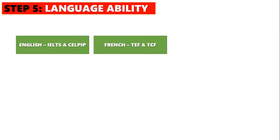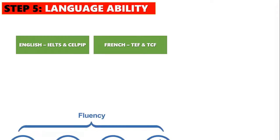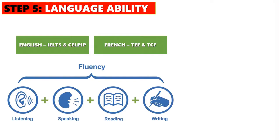The most important step in the PR process is your language ability test, where you can prove your English or French language skills. In English you can take IELTS or CELPIP General; in French you have to take TEF or TCF. You will be assessed on listening, speaking, reading, and writing. This is the most important step because you cannot quickly change factors like your age, education, or work experience — but your language score is the one factor you can change in your profile to boost your CRS score instantly.